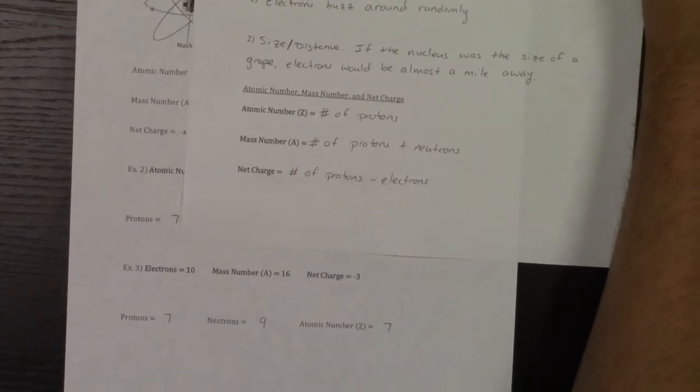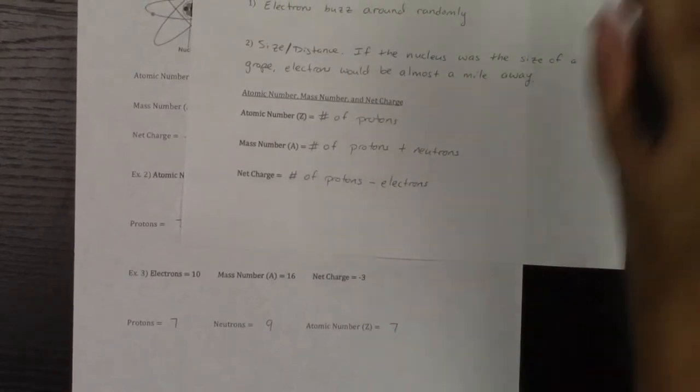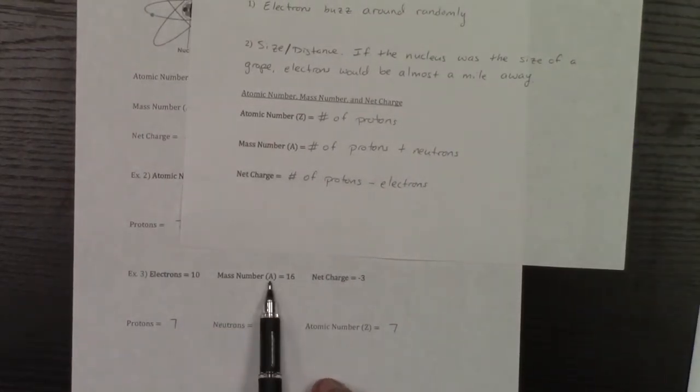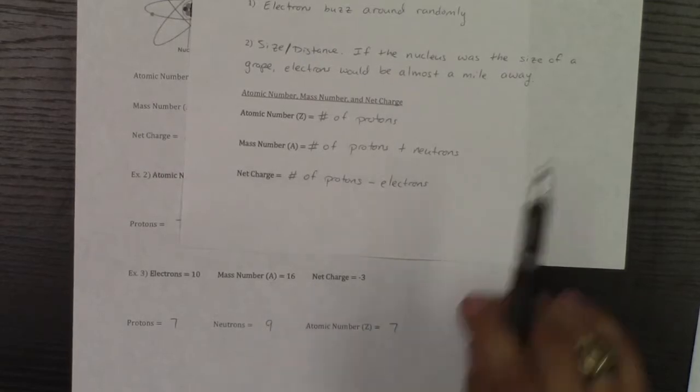Finally, let's do one more. I'm going to kind of mix it up. So what I'm going to give you is electrons are 10, mass number is 16, net charge is a negative three.